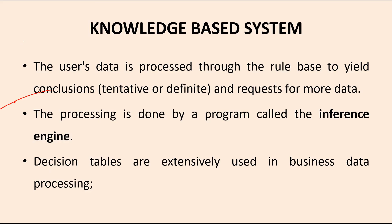For example, if p implies q is a rule, the inference of that is: negation p or q. So you can conclude this particular rule from existing rules available in the knowledge base. These are called inference rules, and this kind of process is done by the knowledge-based system itself.